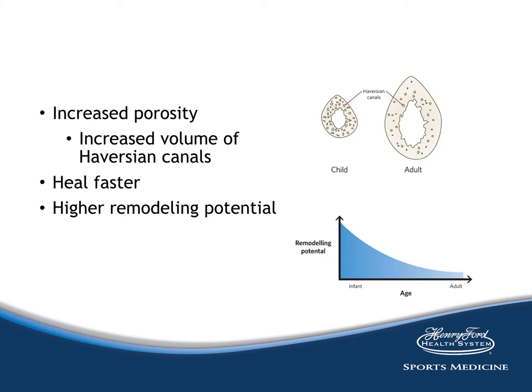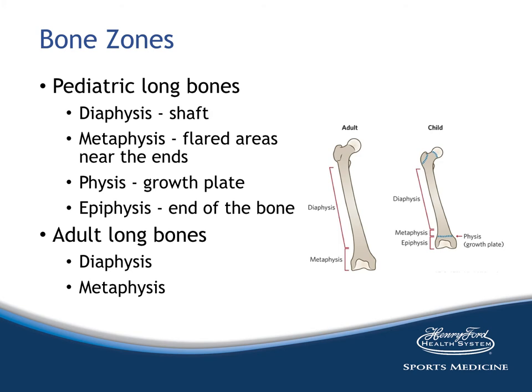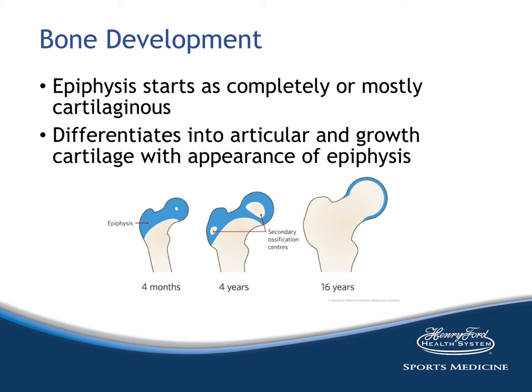Bones in children heal faster and have a higher remodeling potential, which declines over time. It's important to know the names of the different zones. The diaphysis is the main shaft of the bone. As the bone flares towards its ends, we call that the metaphysis. The physis is the actual growth plate, or epiphyseal plate. The epiphysis is the end of the bone in a child. As the bone is developing, the epiphysis starts out mostly as a cartilaginous structure.